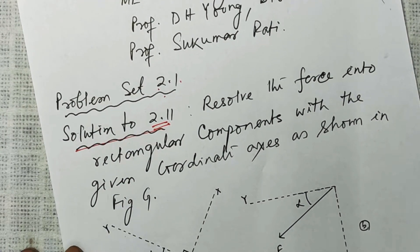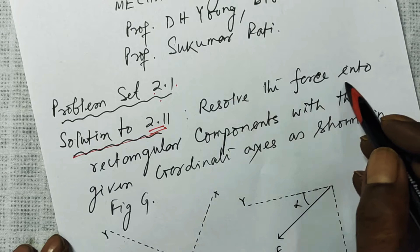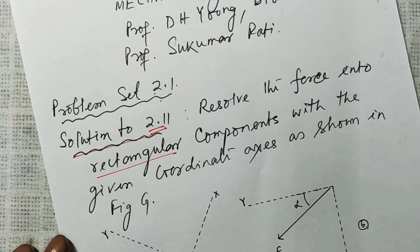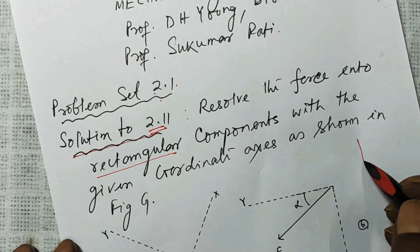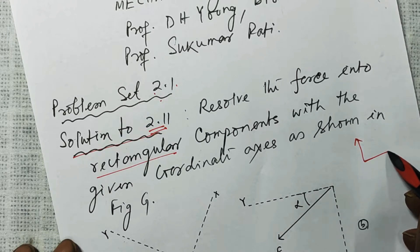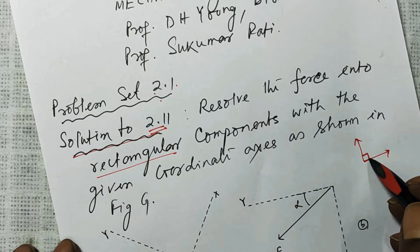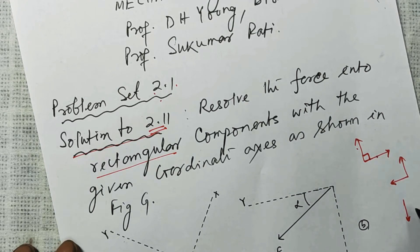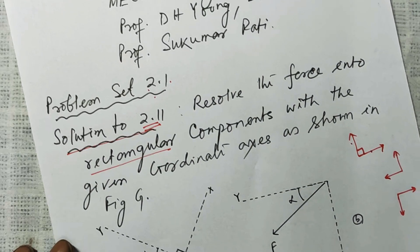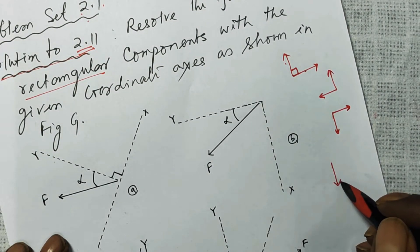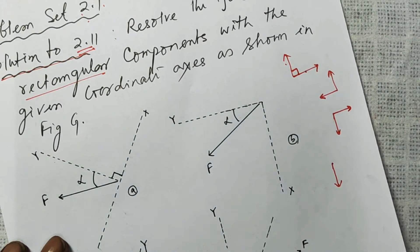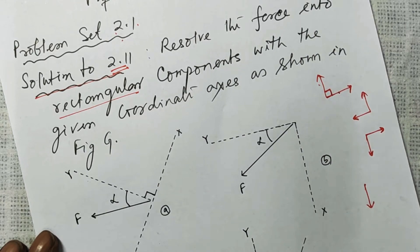The statement of the problem is very simple: resolve the force into rectangular components. Rectangular components means if one component and another component form an angle of 90 degrees between them, then those two components are called rectangular components. Whenever the angle between the two components is 90 degrees, you say the two components are rectangular components.